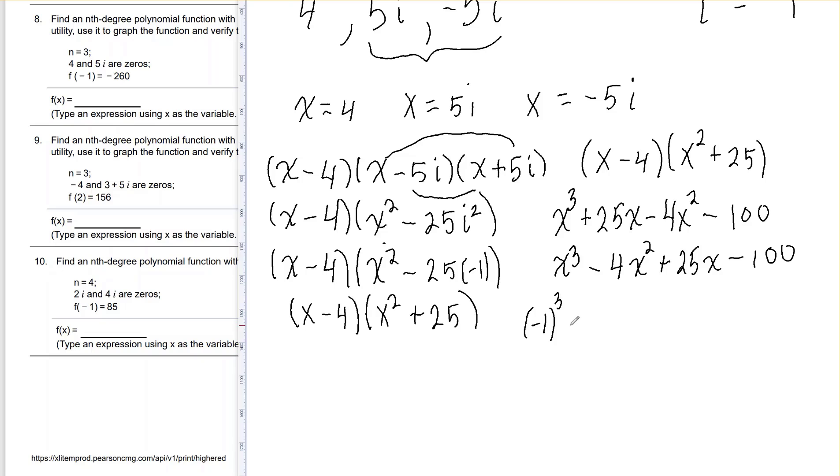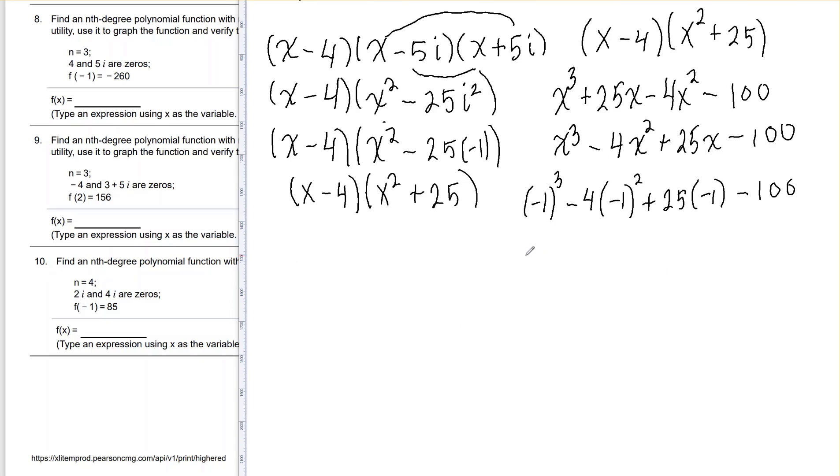Negative 1 cubed minus 4 times negative 1 squared plus 25 times negative 1 minus 100. So that gives me negative 1 minus 4 minus 25 minus 100 is negative 130.